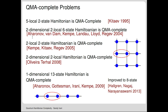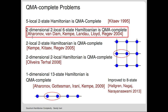This was later improved to eight-state. The original paper wasn't primarily a QMA hardness result—they proved it as a side result. The intent was to study the power of adiabatic computation, and it critically uses the circuit-to-Hamiltonian construction. I'll give an overview of what adiabatic computation is and how the circuit-to-Hamiltonian construction helps compare the circuit model to the adiabatic model.